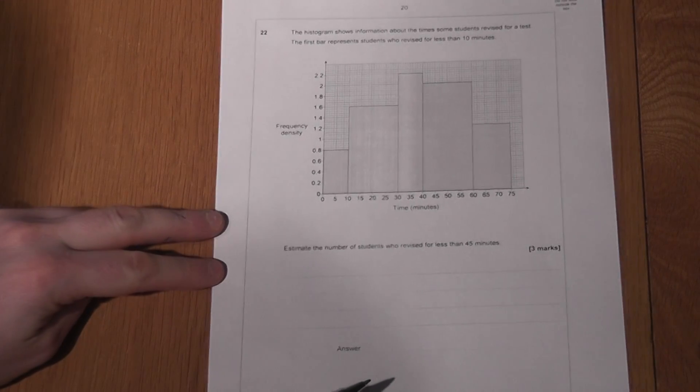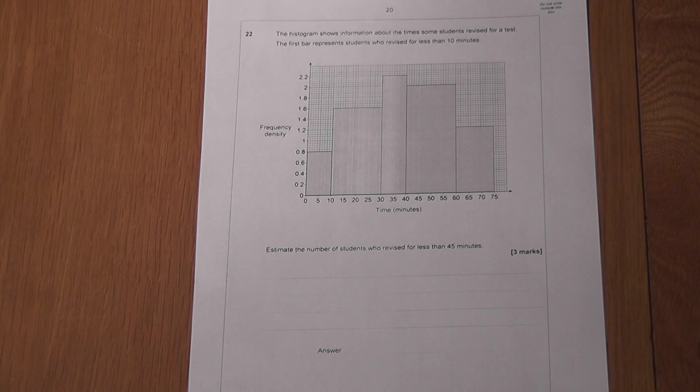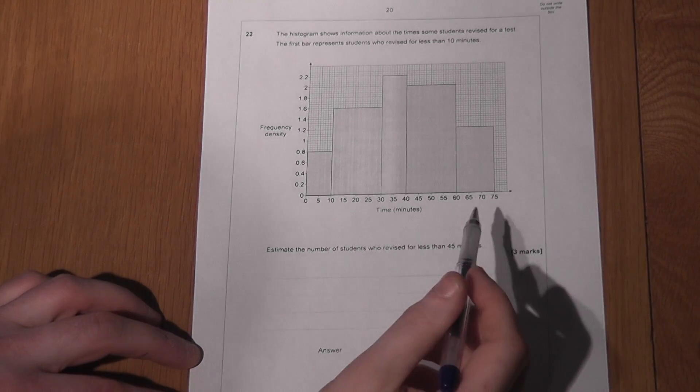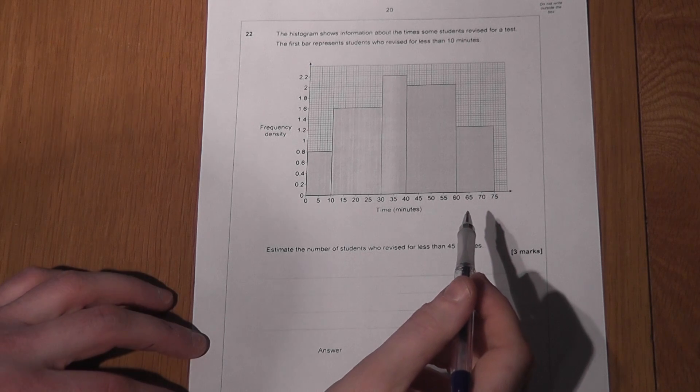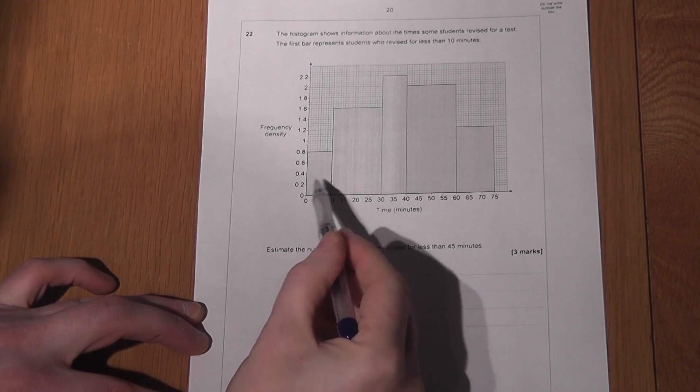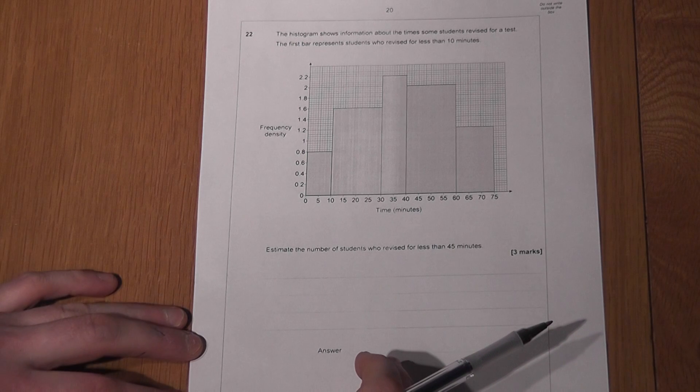This video reviews reading histograms and this information on this graph tells us the times some students took to revise for a test. So for example, the first bar here are those who spent between 0 and 10 minutes revising.